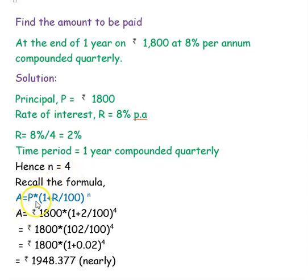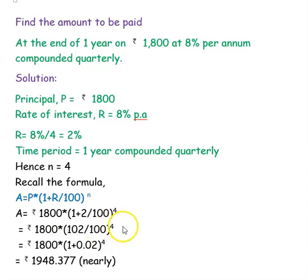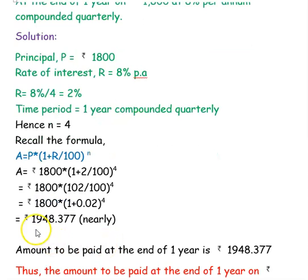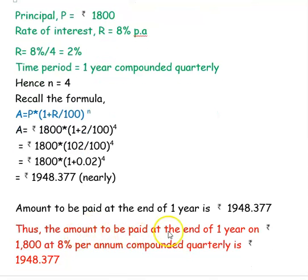Recalling the formula A = P into (1 + R/100)^N, we substitute: 1,800 into (1 + 2/100)^4. Simplifying: 1,800 into (102/100)^4, which is 1,800 into (1 + 0.02)^4. Simplifying gives the amount as approximately Rs. 1,948.377. So the amount to be paid at the end of 1 year on Rs. 1,800 at 8% per annum compounded quarterly is Rs. 1,948.377.